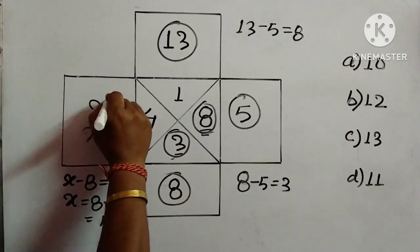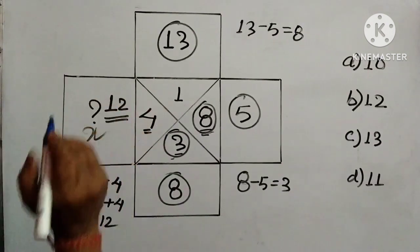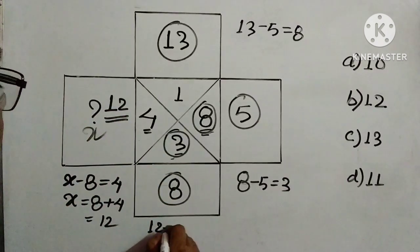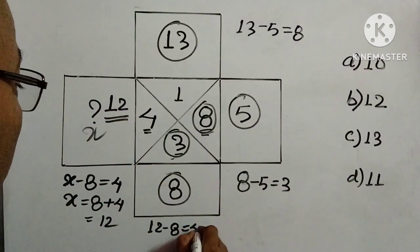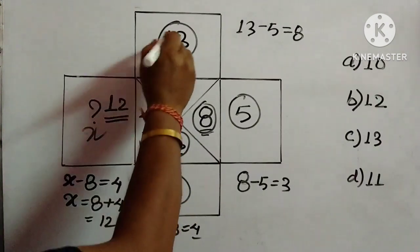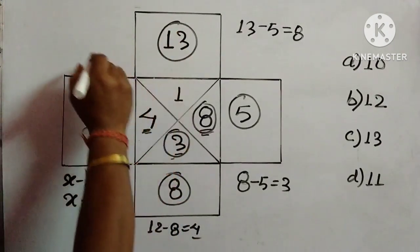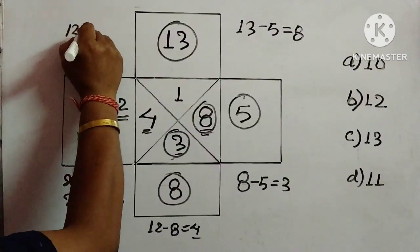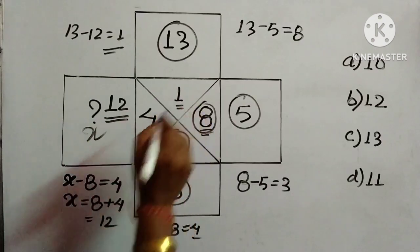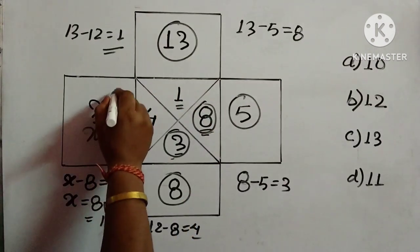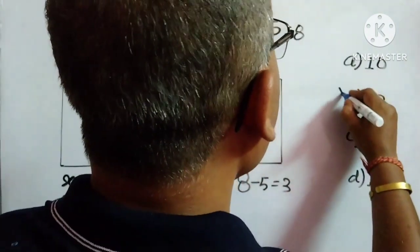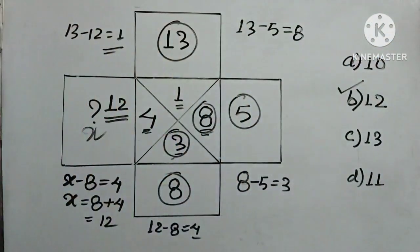So, if we will write 12 over here, then 12 minus 8 is equal to 4 which is given over here, again here for 1, this 13 minus 12 is equal to 1 which is given. So here what we have to write, 12. So, where we have this option, this one option B, so this is the answer.